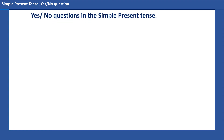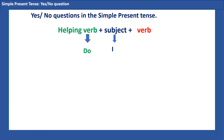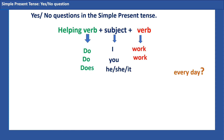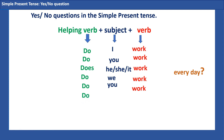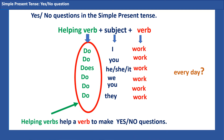To make yes/no questions in the simple present tense you need a helping verb. There are two helping verbs: 'do' and 'does.' With 'do' we use the subjects I, you, we, and they. Do I work every day? Do you work every day? Do we work every day? Do they work every day? With 'does' we use he, she, and it: Does she work every day? Does he work every day? Does it work? Helping verbs 'do' and 'does' help a verb to make a yes/no question.